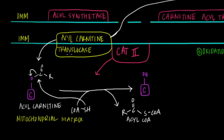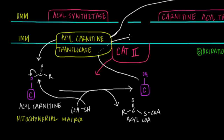The acyl-carnitine translocase protein transporter is actually quite efficient. For every acyl-carnitine molecule it pumps into the mitochondrial matrix, it exchanges it for one molecule of carnitine. So this carnitine molecule produced by CAT II can return via this protein transporter into the intermembrane space, then out through the outer mitochondrial membrane and back into the cytoplasm, where it can be recycled to help transport another fatty acid into the mitochondrial matrix. That's a pretty cool mechanism.